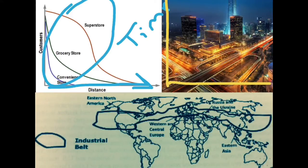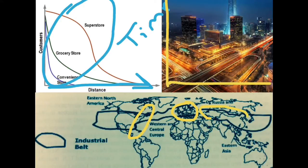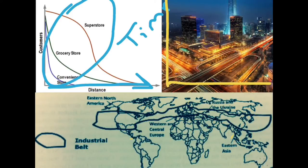Moving on to major industrial regions, we're going to focus on the primary industrial regions. These are the areas of the largest agglomeration of industry, and there are four major areas: Western and Central Europe, Eastern North America, Russia and Ukraine, and Eastern Asia. You can see an industrial belt throughout the world map, and in this belt is where most of the world's industry takes place.